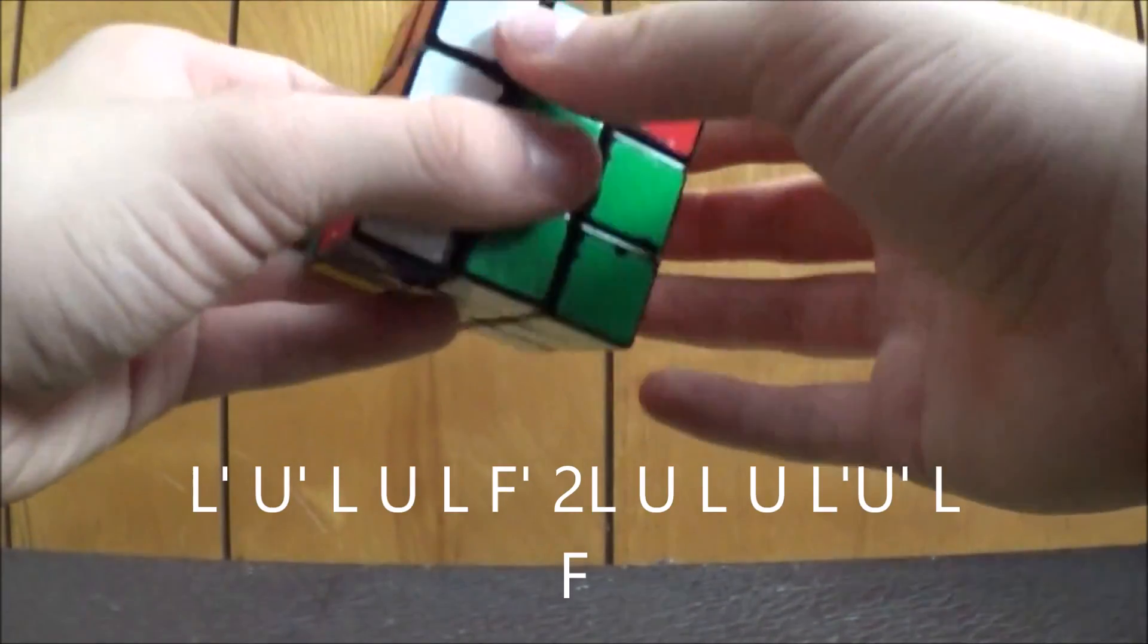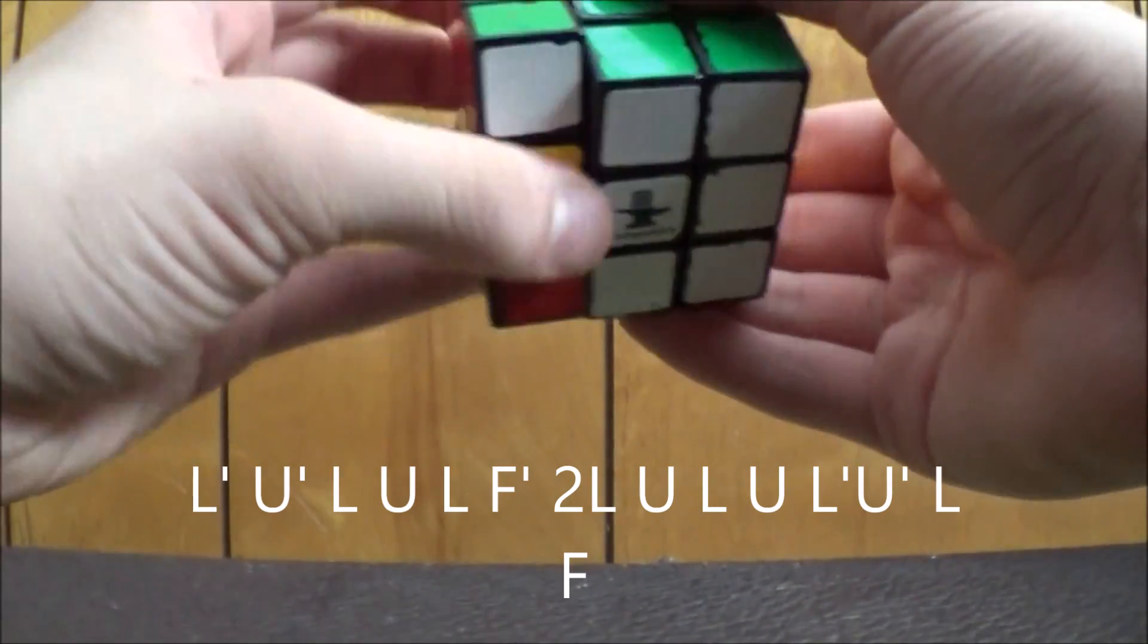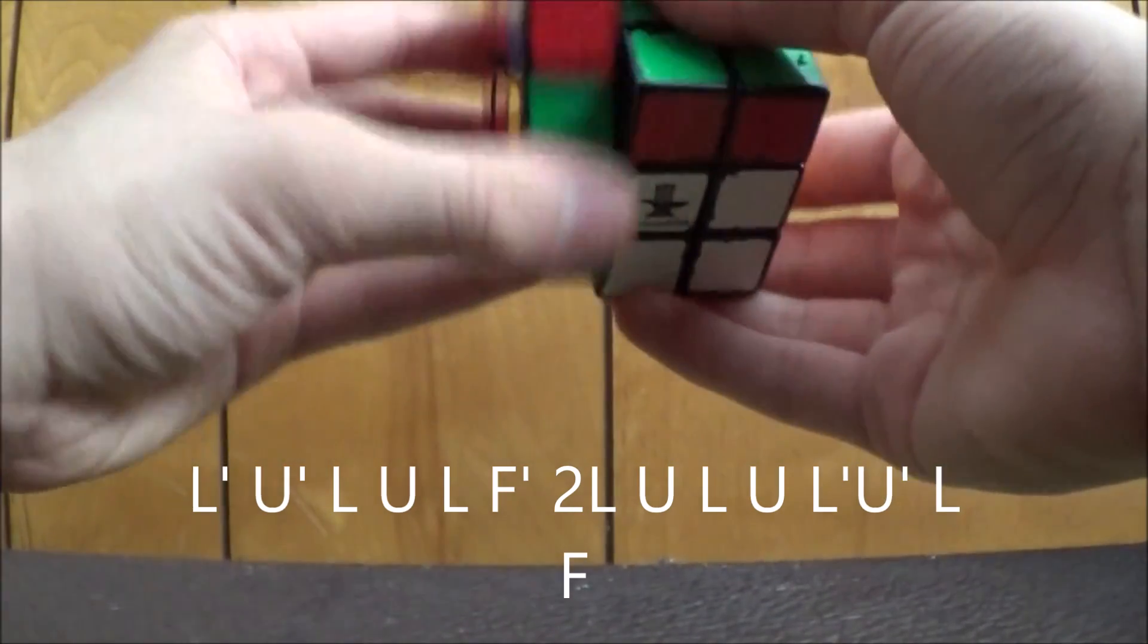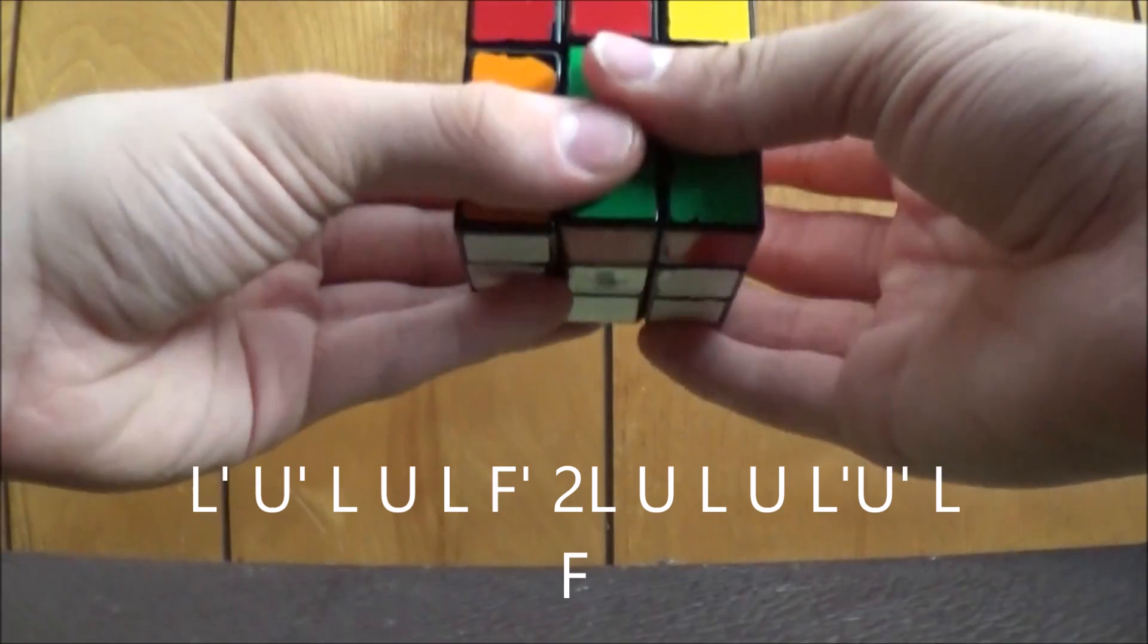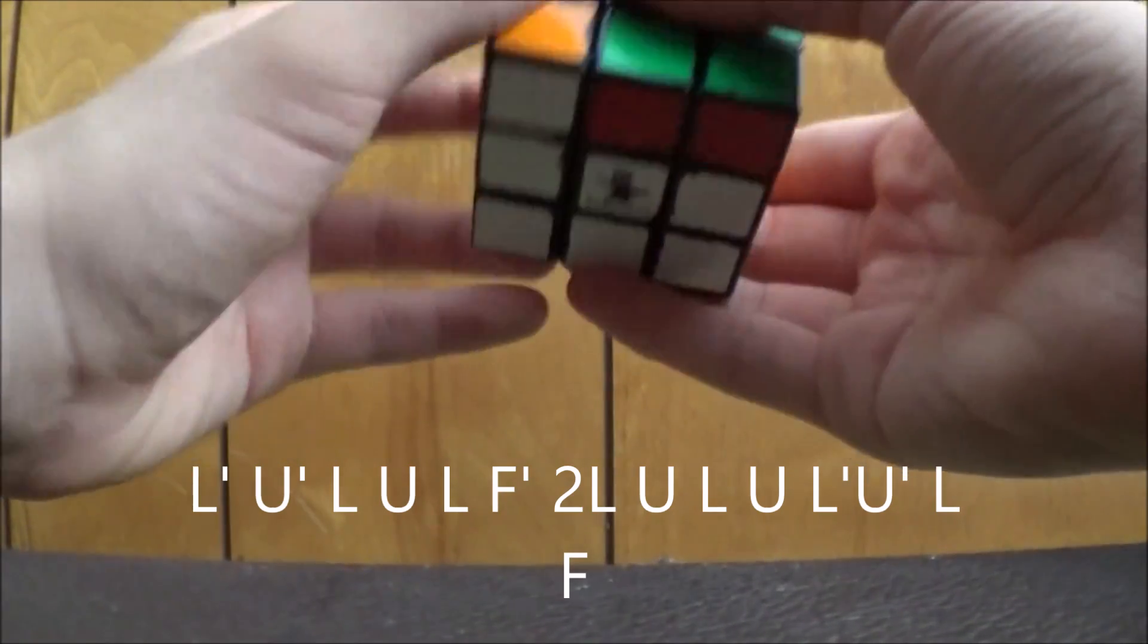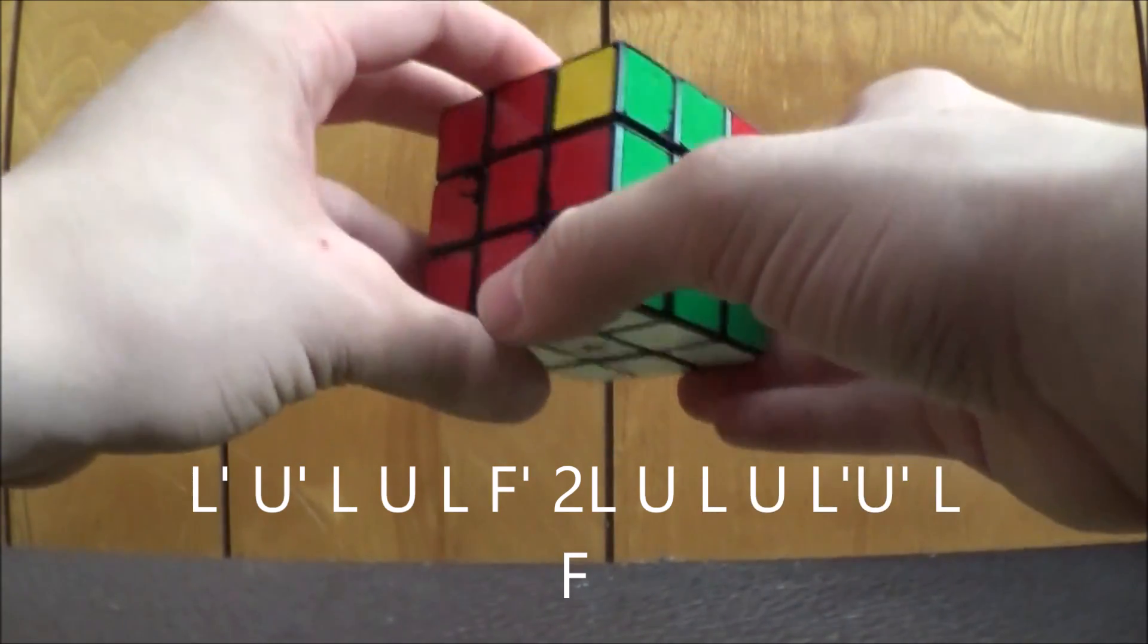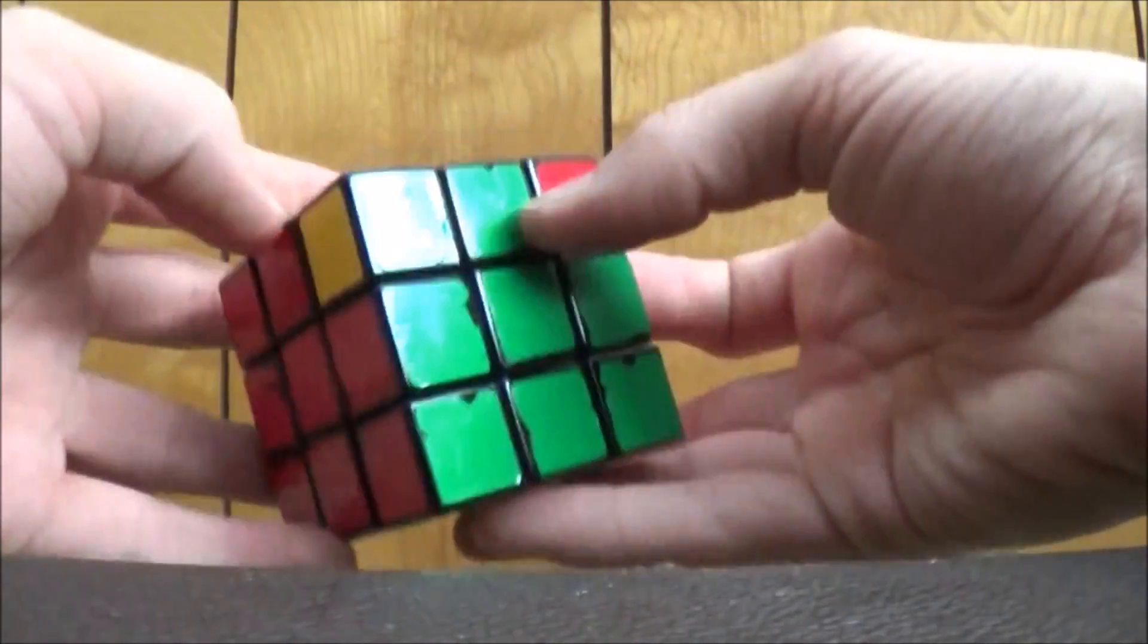L prime, U prime, L, U, L, F prime, 2L, U, L, U, L, F. A lot of moves, but it does save you a few and it pairs all four edges.